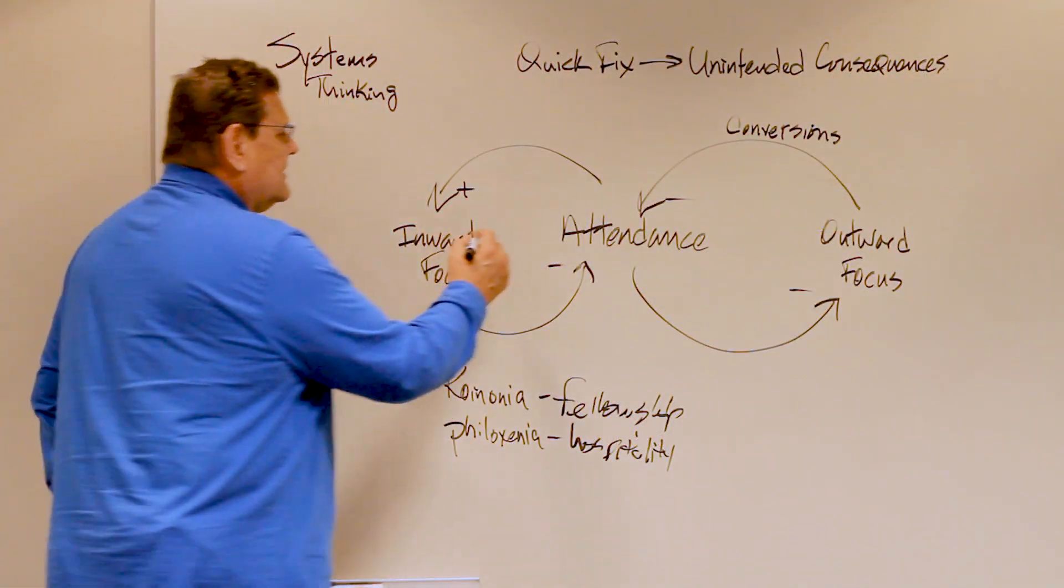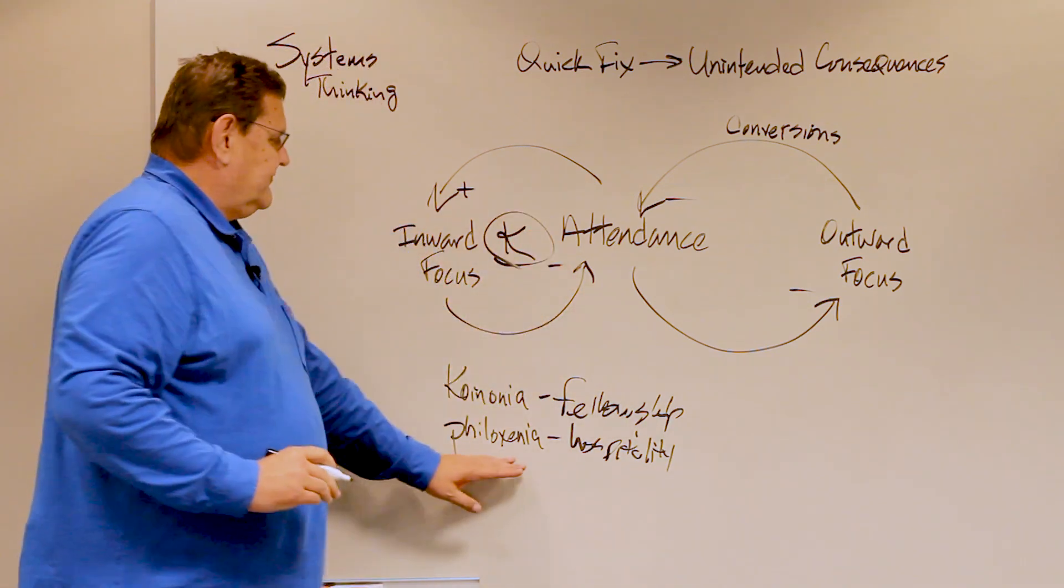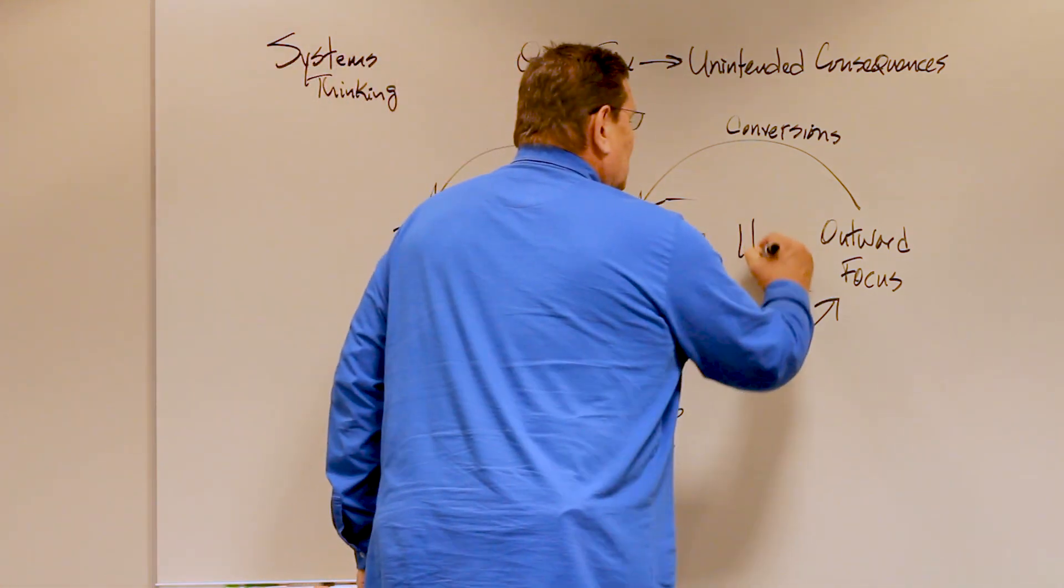Because koinonia is focused inward, and phylloxenia, love or kindness to strangers, is focused outward.